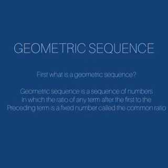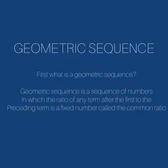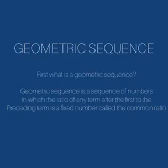Geometric Sequence. First, what is Geometric Sequence? Geometric Sequence is a sequence of numbers in which the ratio of any term after the first to the preceding term is a fixed number called the common ratio.